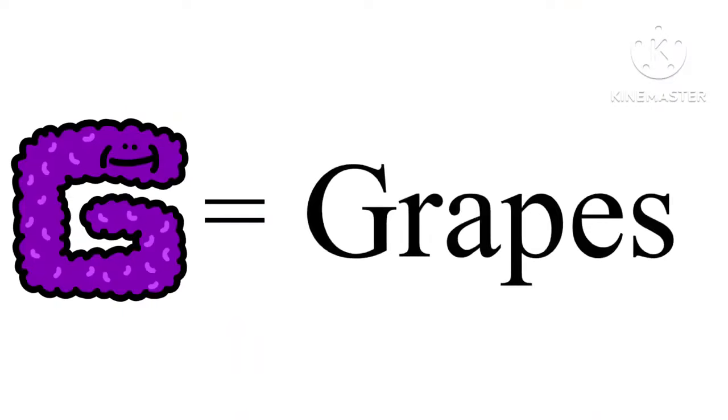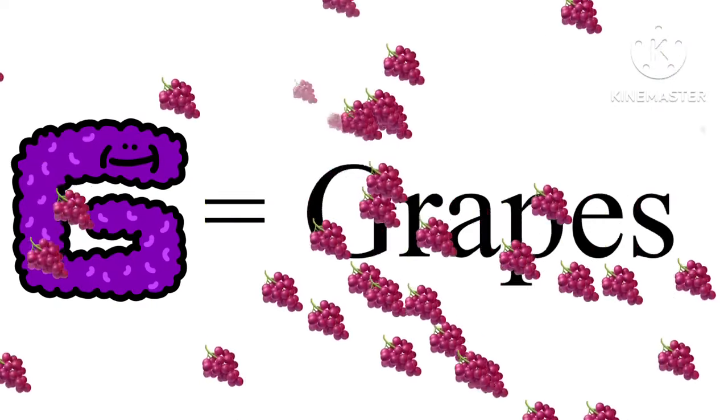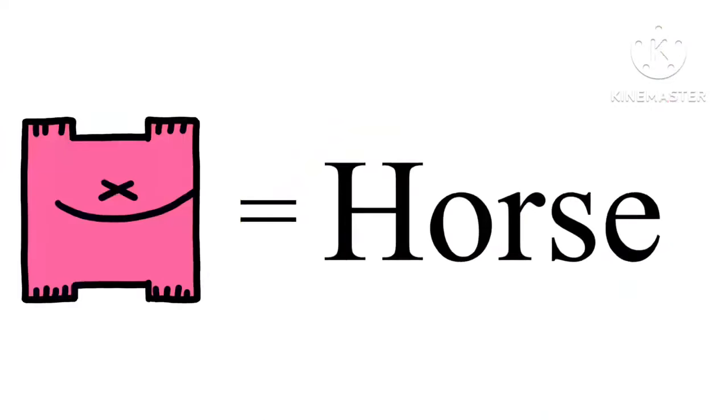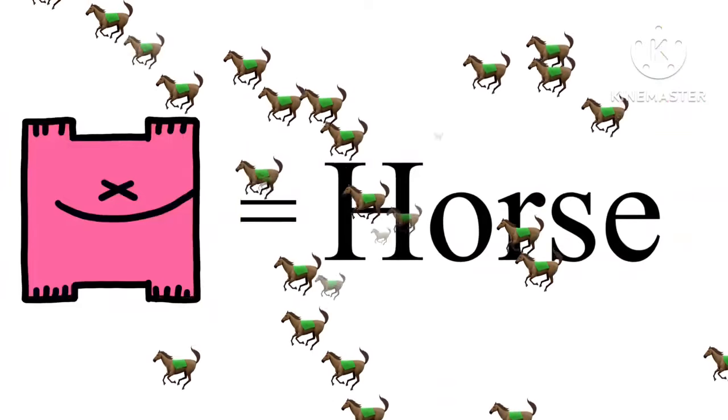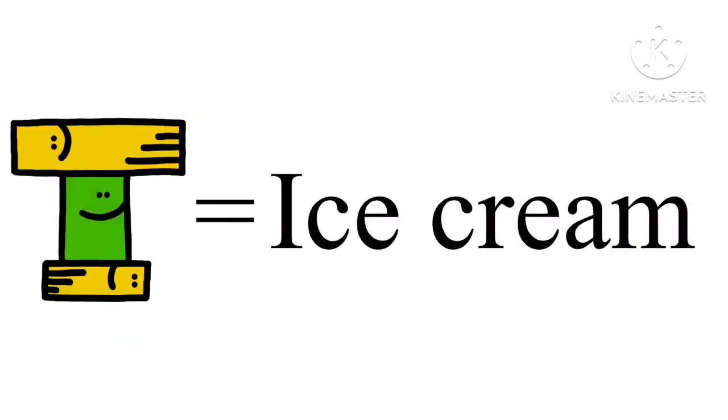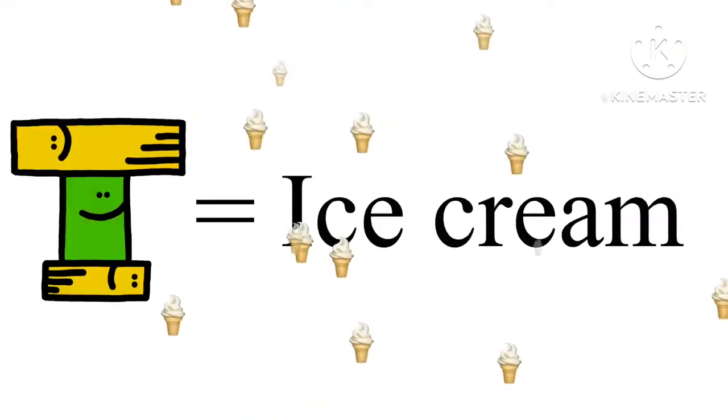G is for Grapes. H is for Horse. I is for Ice Cream.